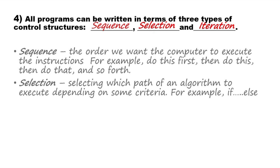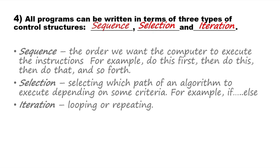The selection is a control structure of the program. The iteration is looping or repeating. The repeat mark is the iteration concept.